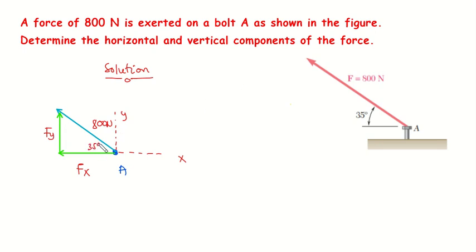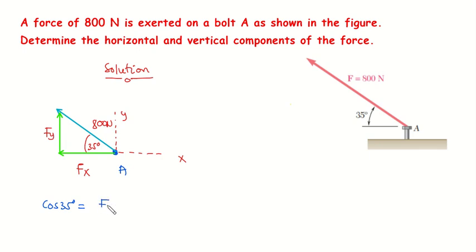We have this angle to be 35 degrees. To find the components of this force, you can take cosine and sine of the 35 degree angle. Taking cosine of 35 degrees gives us the adjacent side over the hypotenuse. The adjacent side is FX and the hypotenuse is 800.